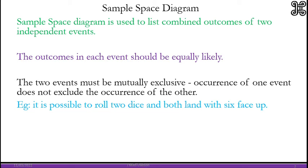For example, if you have two dice and you roll, it's possible both could land on six face up or both could land on one face up. So the outcome of one shouldn't affect the outcome of the other.